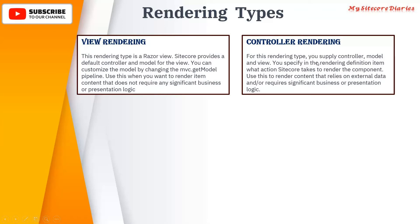Controller Rendering is for when you supply the controller, model, and view — it is a complete MVC kind of rendering. You have a controller, a model, and a view. You specify in the rendering definition item what action to call to render the component. Use this to render content that relies on external data or requires significant business or presentation logic. Simply put: if you have business logic, go for Controller Rendering; if there is no business logic and you are simply displaying data, go for View Rendering.